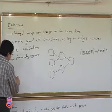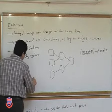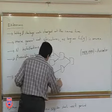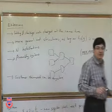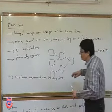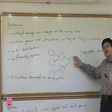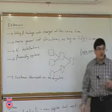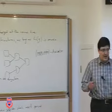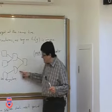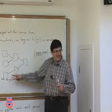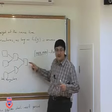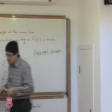Another extension: customer demand can occur anywhere as long as it is independent and identically distributed. We assumed customer demand only at the lowest-level installation, but in general it can be anywhere. In a manufacturing system you also manufacture spare parts, so there is demand at other stages besides final assembly — and this can be accommodated.